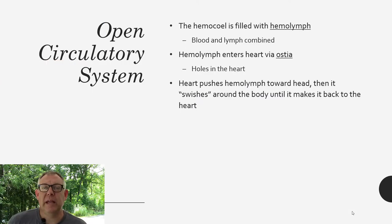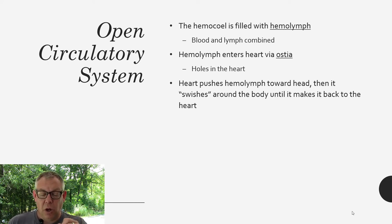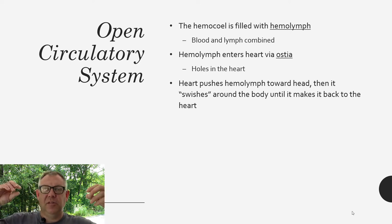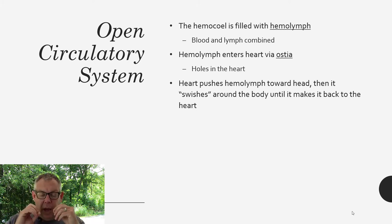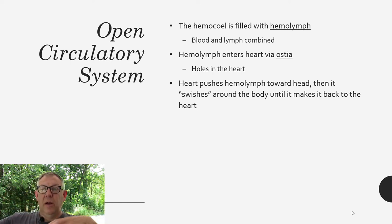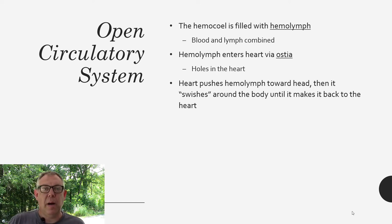This hemocele is filled with something called hemolymph — it's blood and lymph combined, so your lymphatic and circulatory systems are merged. This hemolymph gets into the heart through little holes called ostia. Since it's an open circulatory system, you don't have big vessels bringing blood to the heart — the heart has lots of little holes, the hemolymph goes in, the heart contracts and pumps the hemolymph toward the head, and it just swishes around the body. That's how an open circulatory system works.